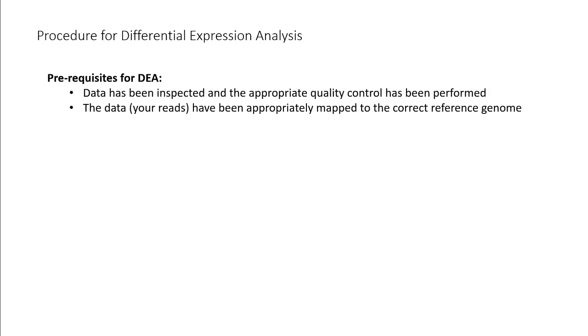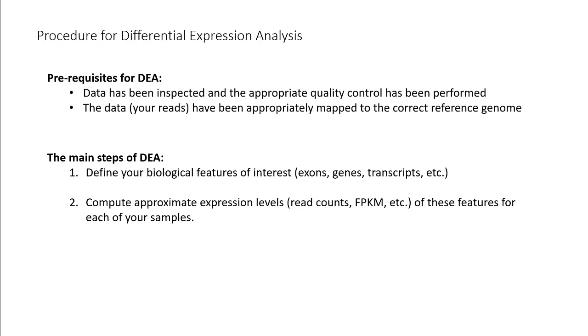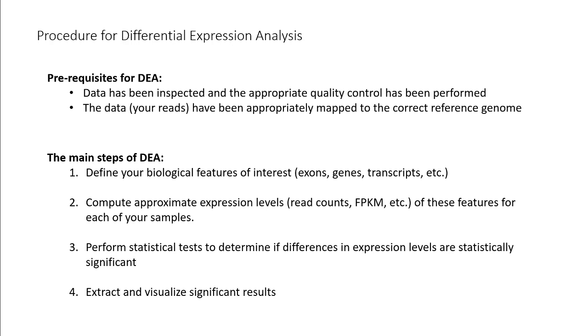First, you define your feature of interest—these can be exons, genes, transcripts, in the case of RNA-seq data. Second, you'll compute the expression levels for the entire set of features for each of your samples. Third, perform statistical testing to calculate adjusted p-values in order to determine which features demonstrate statistically significant differences between your various sample groups. And finally, you'll extract and visualize significant results for a specified alpha value.